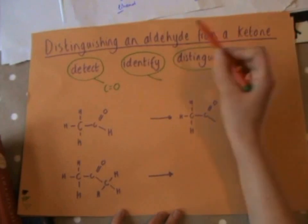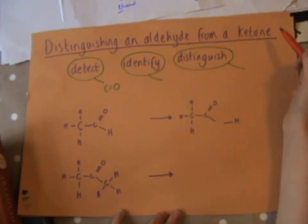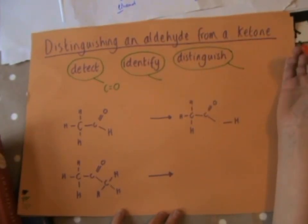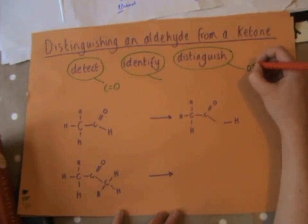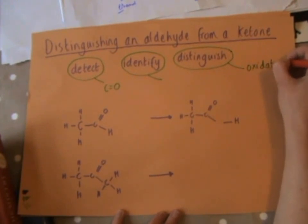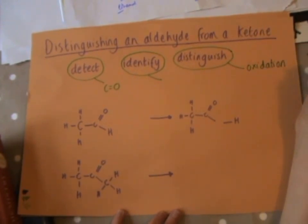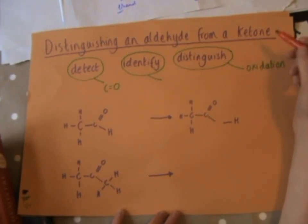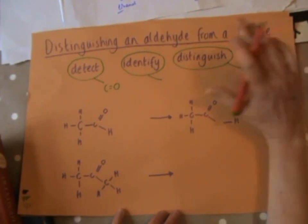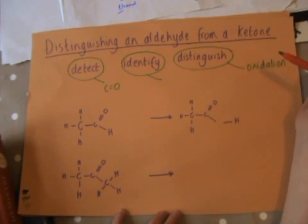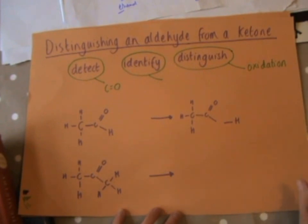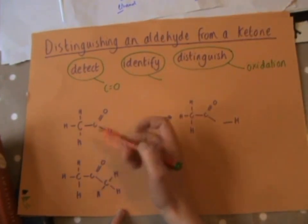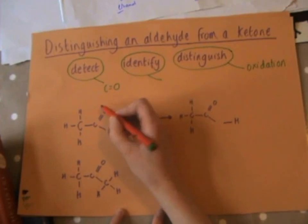We need a reaction in which these two different types of compounds will produce a different result. One of the ways in which they react differently is what happens to them in terms of oxidation. We know that an aldehyde will oxidize but a ketone won't oxidize, so we're going to use oxidation reactions to distinguish between aldehydes and ketones.